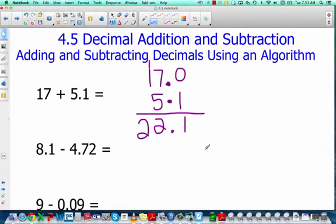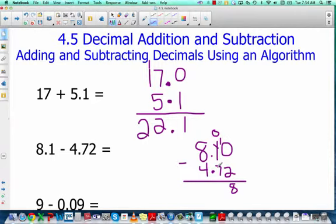Alright, subtraction. Let's do this one together. 8.1, I'm going to line up my decimal and build my next number around it. 4.72. Oh, notice I have a gap right here, so I'm going to fill it in with a zero. And this is a subtraction problem. I can't take two away from zero, so I'm going to borrow. 10 minus 2 is 8. I can't take seven away from zero, so I'm going to borrow again. Add the one. 10 minus 7 is 3. And 7 minus 4 is also 3. I'm going to bring my decimal point straight down. My answer will be 3.38.